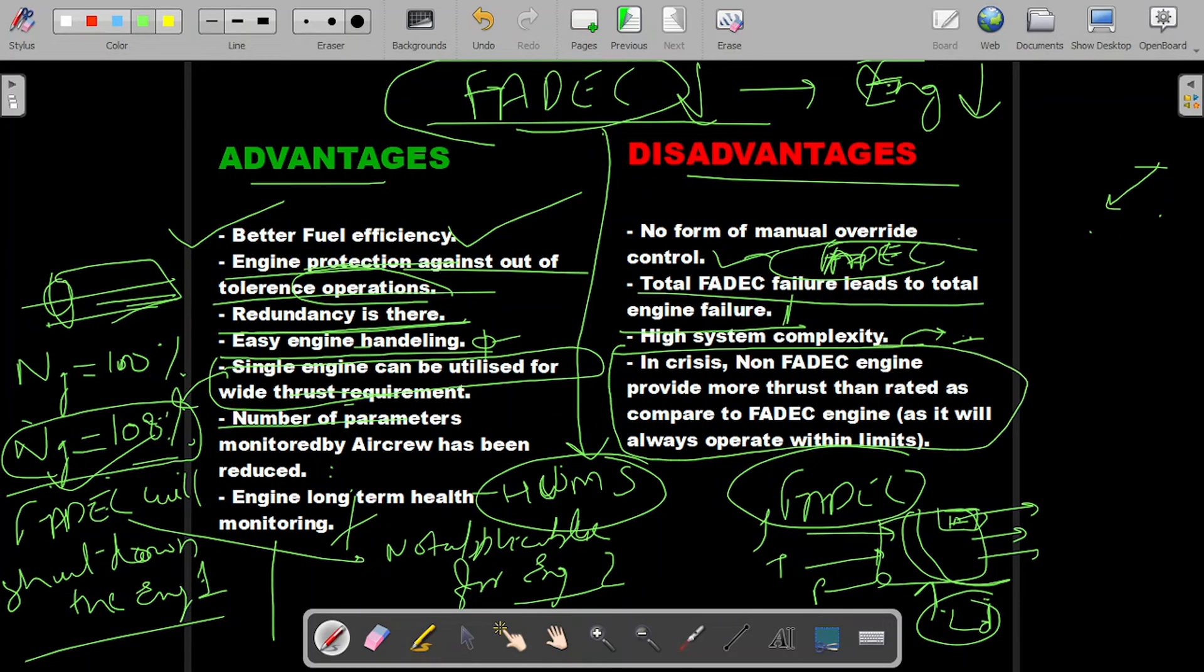This point is very important. I have intentionally put this point: increase in crisis. It's a disadvantage that in a crisis, when aircraft or helicopter requires more power and the pilot has to lift the collective, a non-FADEC engine provides more thrust than rated. During those times, the non-FADEC engine will provide better thrust compared to FADEC engine because the FADEC engine will always operate within the limit which is already programmed. This is a disadvantage of a FADEC engine; it's a positive point for a non-FADEC engine.